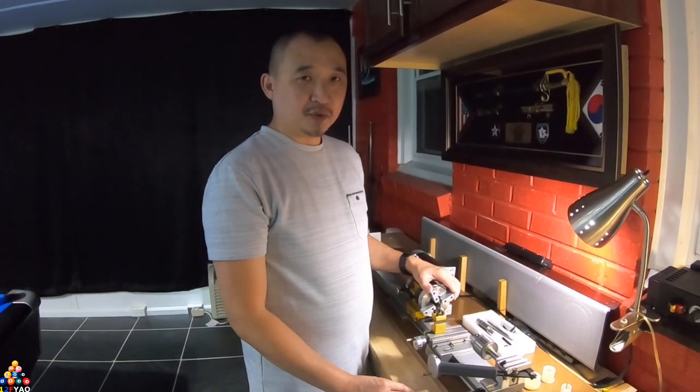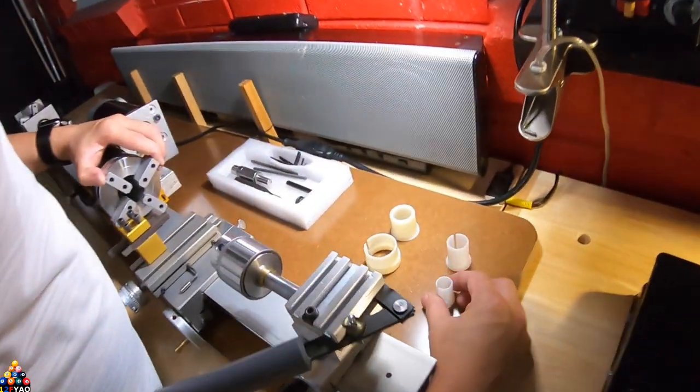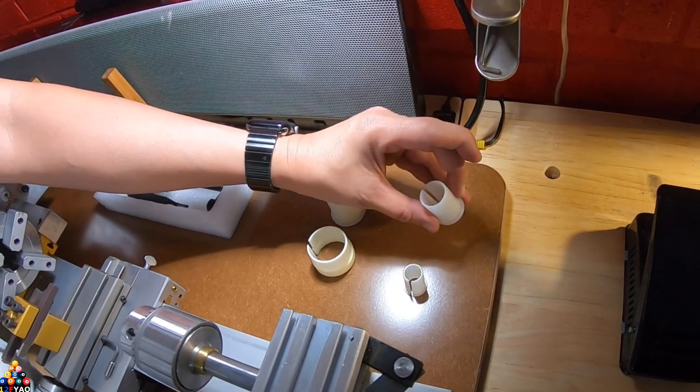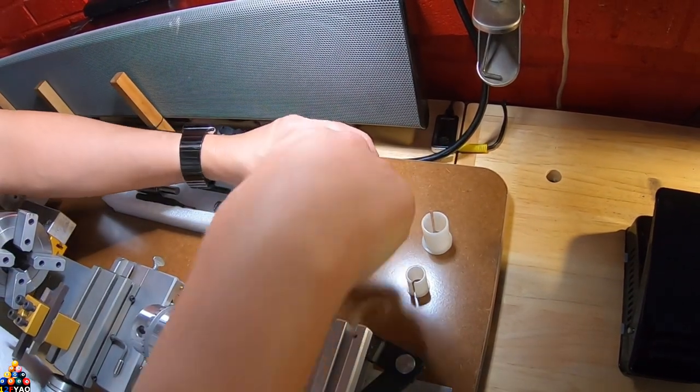Some of the accessories the cue lathe comes with are the collets. These collets are for the shaft itself. This is the front part of the shaft and this is the back part of the shaft.